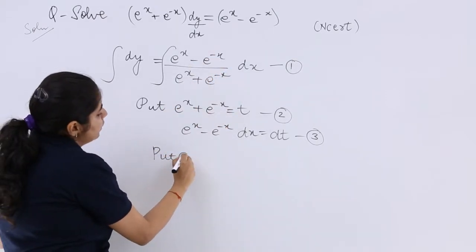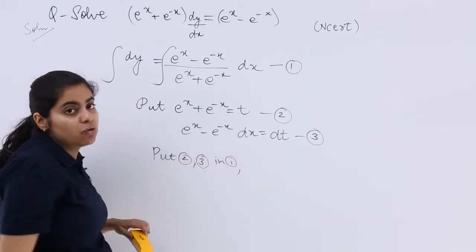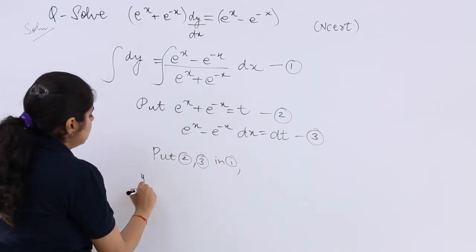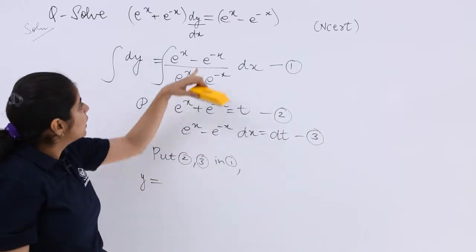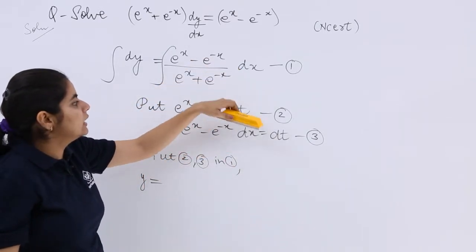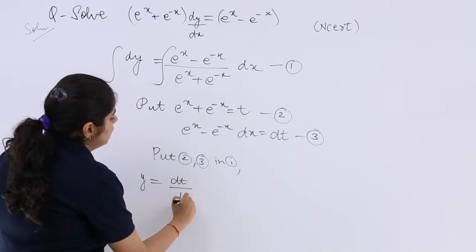Put 2 and 3 in 1. What is the further solution? Integral of dy is y. The numerator is dt, denominator is t. So dt/t.